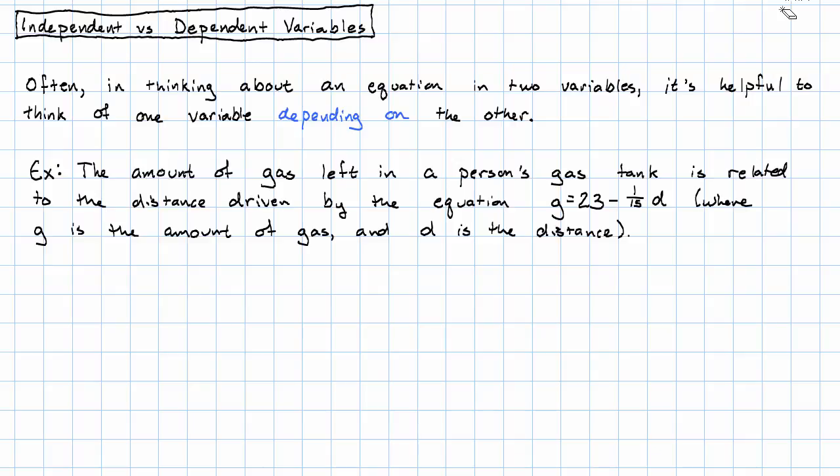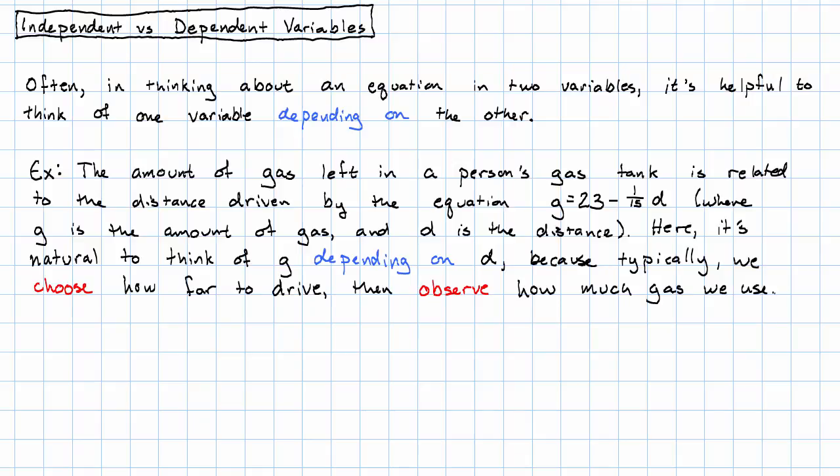It's natural to think about the amount of gas left depending on the distance driven. Why? Well, because typically when we're using our car, what do we do? We decide how far to drive, and then based on how far we drove, we observe how much gas we used.